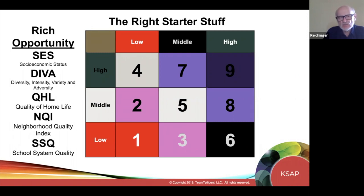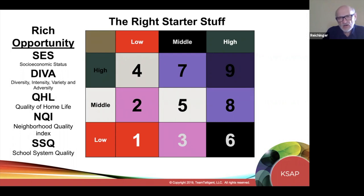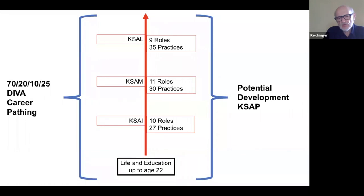And then the last one is SSQ — school system quality. There's a lot of press about the nature of school systems and the quality of education being delivered. So if you wanted to take a kid with the 49% genetic predisposition and ask yourself whether 30 years later they're going to be a legendary leader in a Fortune 500 company, the answer is: it depends on the quality of the experiences they go through.